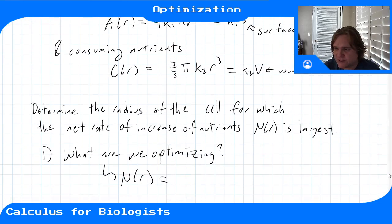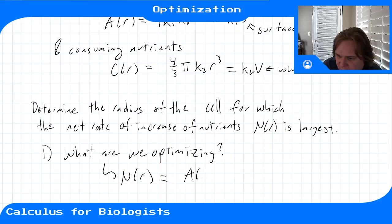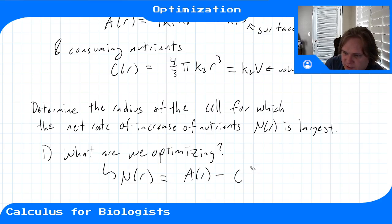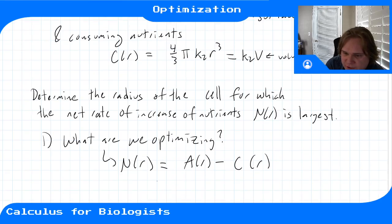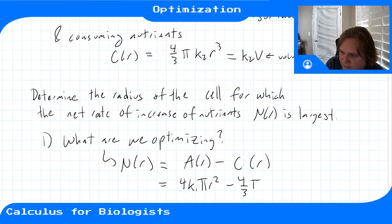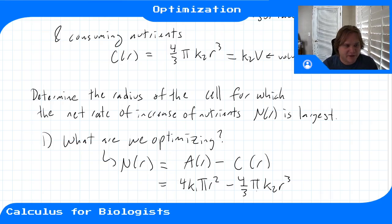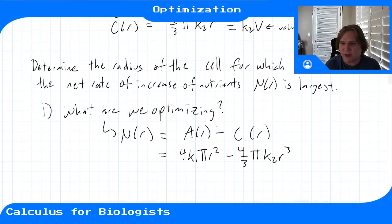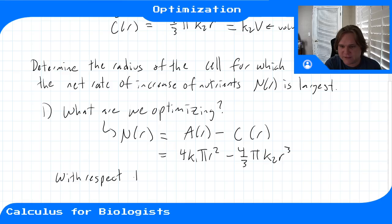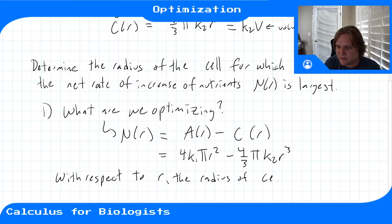The net rate N(r) would be absorption minus consumption — we absorb nutrients into the cell and then consume them, so the net increase is the amount absorbed minus the amount consumed. So our function is N(r) = 4k1πr² − (4/3)πk2r³, where k1 and k2 are the different rates of absorption and consumption. We want to optimize this N(r) function with respect to r, the radius of the cell.